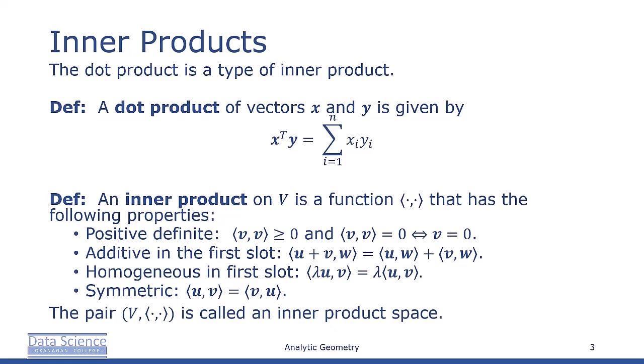We call the ordered pair consisting of a vector space V and an inner product an inner product space.